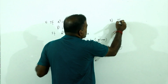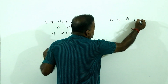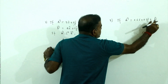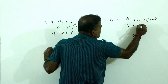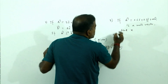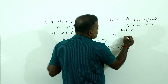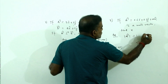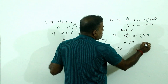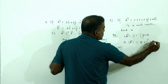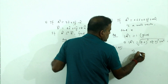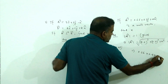Next question: if vector A equals 0.6i cap plus 0.7j cap plus xk cap is a unit vector, find x. Answer: since A is a unit vector, the magnitude of A equals 1.